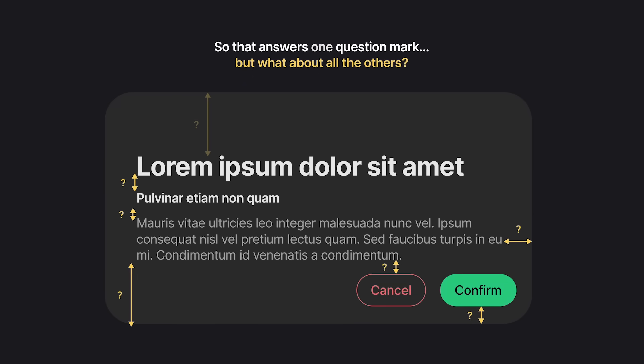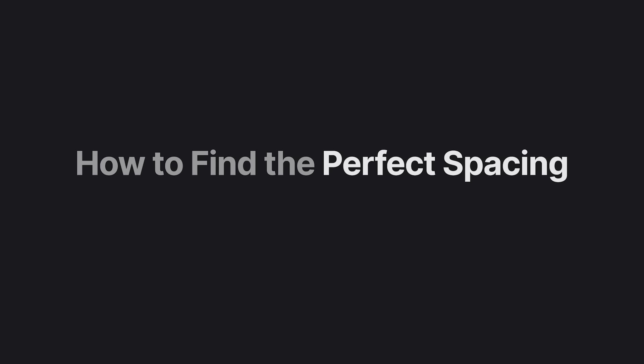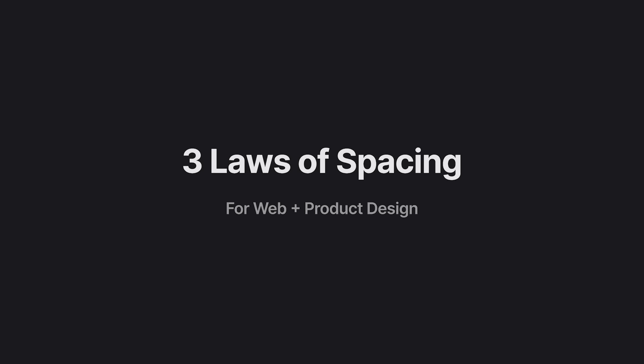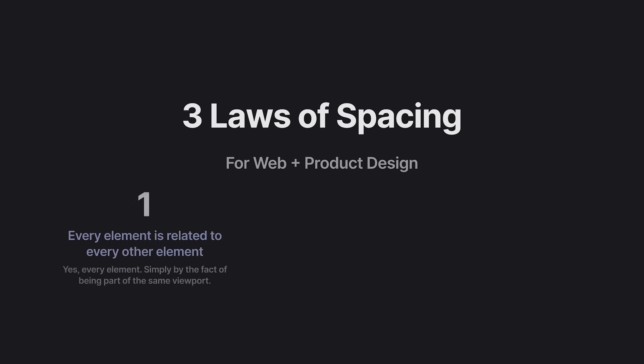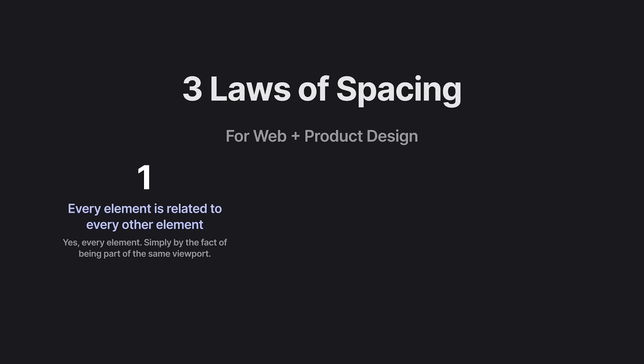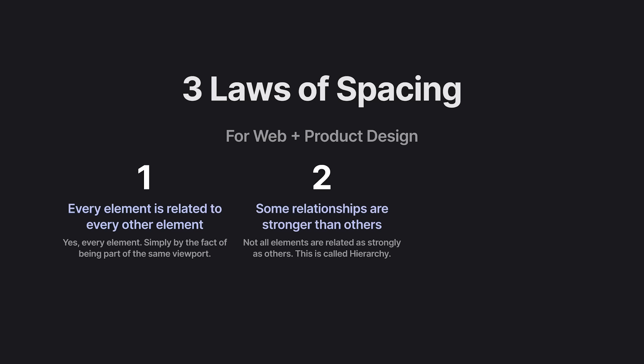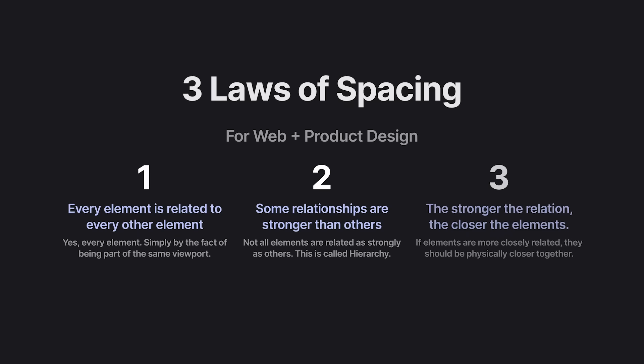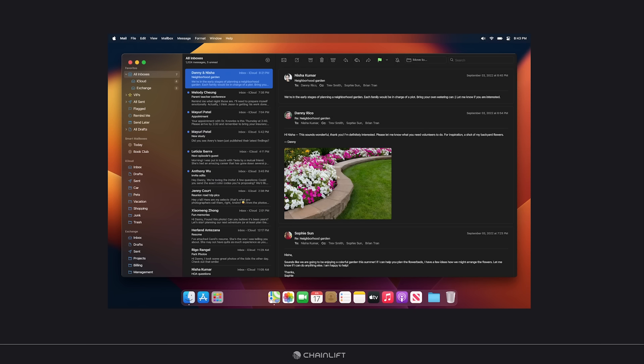That gives us an idea of how complicated spacing can really be. But what about all the other elements — how far away should everything be from everything else? For our purposes, there are three laws of spacing. The first is that every element is related to every other element, even if just because they're in the same viewport. Some relationships are stronger than others — that's where your information hierarchy comes from. The stronger the relationship, the closer the elements should be.